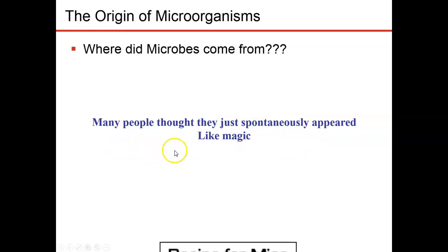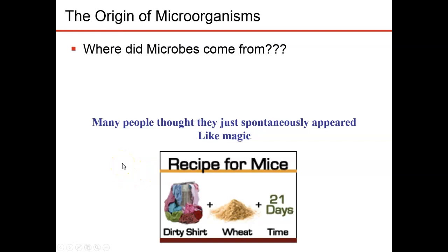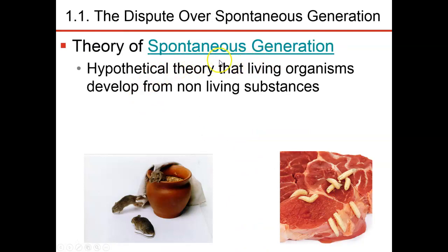This is the theory of spontaneous generation. For example, you could take dirty clothing, throw it into your cellar where you store wheat, and after about 21 days you would have mice — not just baby mice, but adult mice. Life comes from non-life. This theory states that living organisms develop from non-living substances. People thought wheat grows mice, meat grows worms or flies.